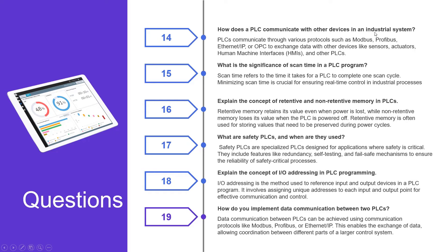How does a PLC communicate with other devices in an industrial system? PLCs communicate through various protocols such as Modbus, Profibus, Ethernet, or OPC to exchange data with other devices like sensors, actuators, human-machine interfaces, and other PLCs. What is the significance of scan time in a PLC program? Scan time refers to the time it takes for a PLC to complete one scan cycle. Minimizing scan time is crucial for ensuring real-time control in industrial processes.